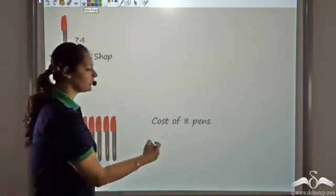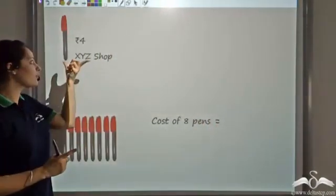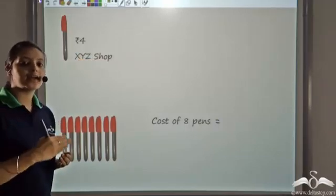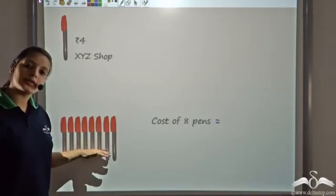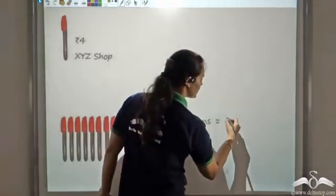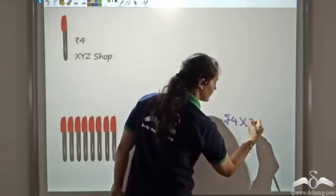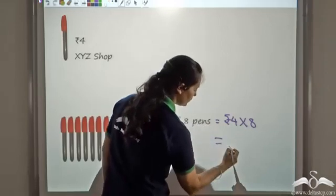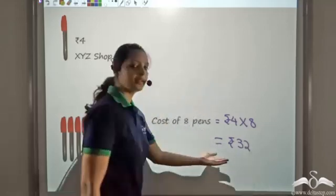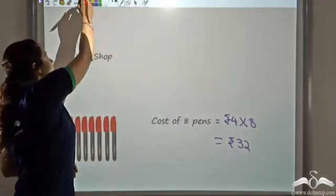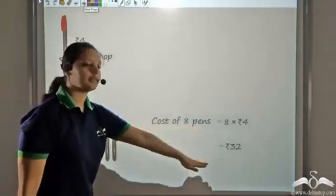So for XYZ, 1 pen costs Rs 4, but I wanted to find the cost of 8 pens. Since 1 pen costs Rs 4, for 8 pens you have to add 4 eight times — repeated addition of 4, which is nothing but multiplication. So this would be equal to Rs 4 times 8, and 8 fours are 32, that is Rs 32. So in XYZ shop, 8 pens cost Rs 32.